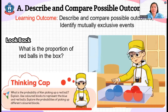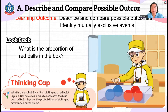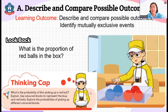Let's start with Lesson A: Describe and Compare Possible Outcomes. Look at this boy — he has some blue and red balls. So, what is the proportion of red balls inside the box? What is the probability of Ron picking up a red or a blue ball? You can use color blocks to represent the blue and red balls and try to answer this during our class.